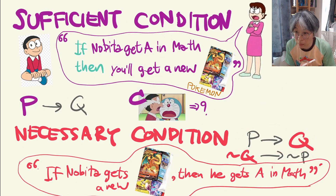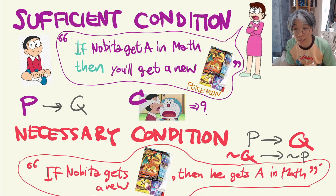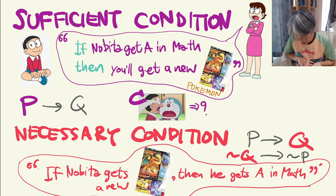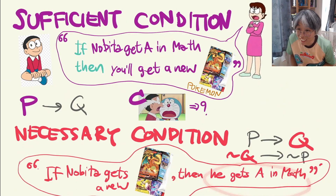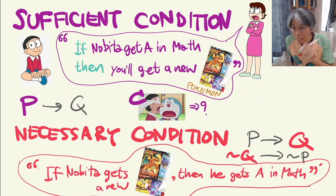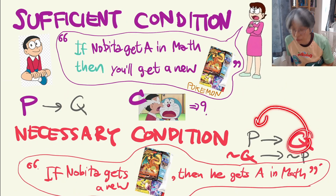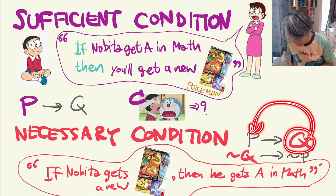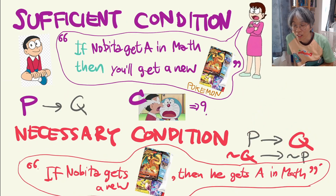If you take a look at the statement P then Q, mathematically we know that the contrapositive is: not Q then not P. Not Q then not P is the statement that if he doesn't get an A, then he will not get a new card. So getting an A in math is very necessary for Nobita to get that card.